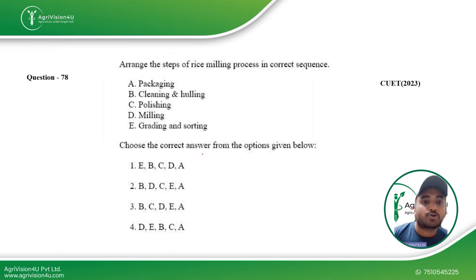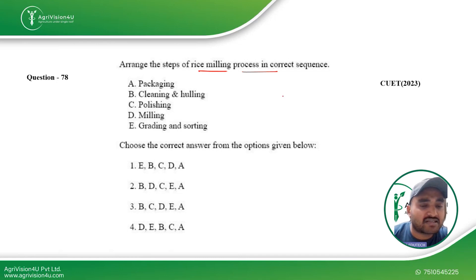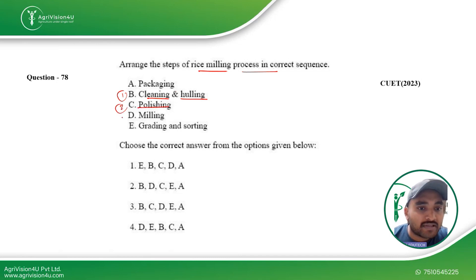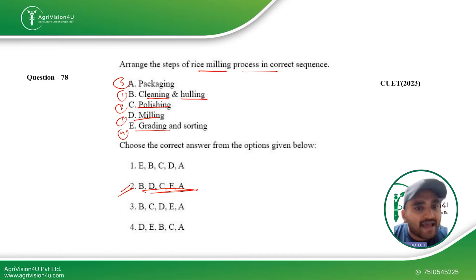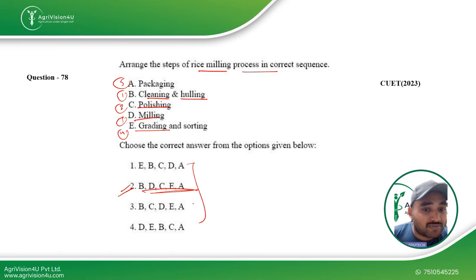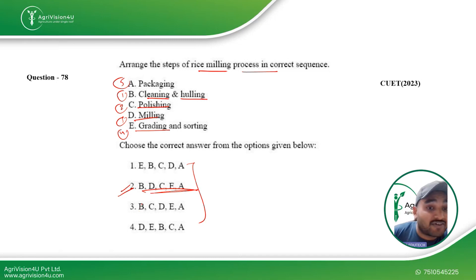The next question asks to arrange the steps of the rice milling process in the correct sequence. We covered this in the cereals and pulses section. The correct order is: cleaning and hulling first, then polishing, then milling, then grading and sorting, and finally packaging. Option B is the right answer. As a tip, the initial step is usually some form of cleaning and the final step is packaging, which can help you determine the answer — but note that paper setters may place cleaning as the first part in multiple options to test you.